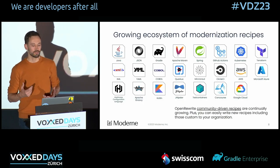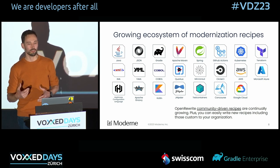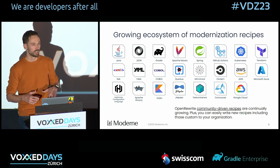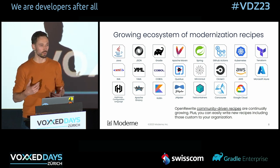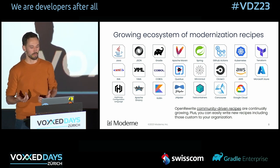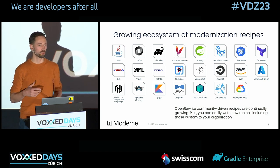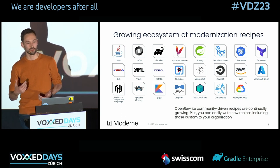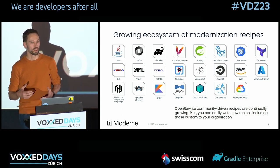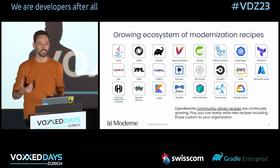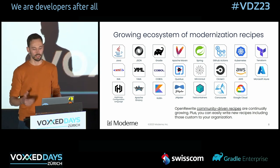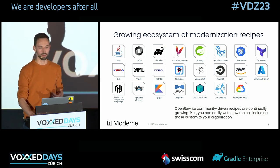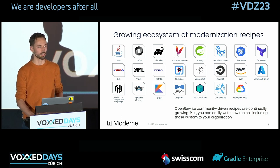The initial focus for Open Rewrite is on Java Virtual Machine languages and surrounding technologies. There are parsers for Java, Groovy, YAML, and XML. These in turn unlock support for build tools such as Maven and Gradle, and libraries such as JUnit, AssertJ, and Guava. Ultimately, refactoring entire frameworks and platforms is supported, with recipes available for application frameworks such as Spring, Quarkus, and Micronaut.